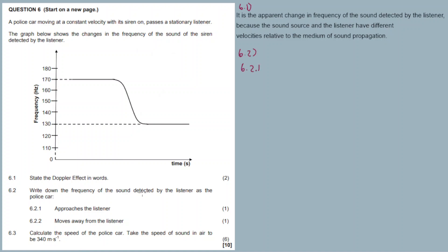6.2.1: write down the frequency of the sound detected by the listener as the car approaches. From the graph, the answer is 170 Hz. 6.2.2: the frequency as the car moves away from the listener — from the graph, we get a frequency of 130 Hz.